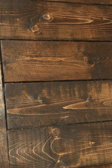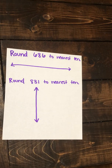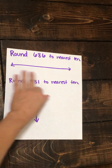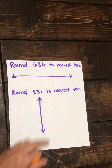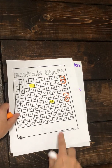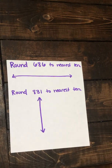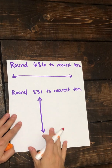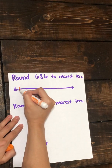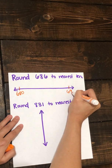Now let's try an example on a number line. We need to round 686 to the nearest ten. First, let's fill in our number line. Looking back at the hundreds chart, 86 is between 80 and 90, so I'm going to put those numbers on my number line — 680 and 690.